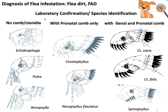In the earlier part of my presentation, I talked about the morphological features of the flea. There are two types of combs: one is the genal comb and another one is the pronotal comb. If we divide the flea into three groups: fleas without any comb — those will be Echidnophaga, Pulex, and Genotpsylla; fleas with pronotal comb only — those are Ceratophyllus and Nosopsyllus fasciatus; and fleas with both genal and pronotal comb — those could be Ctenocephalides canis, Ctenocephalides felis, and Spilopsyllus.